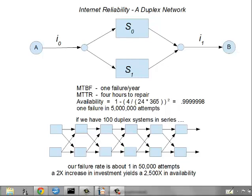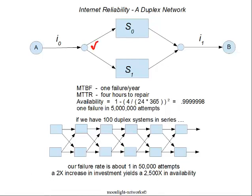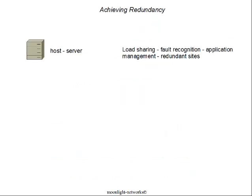Meeting this theoretical model is no simple task. The model assumes perfect information at the switch — that it never switches to a failed system rather than an in-service system. It also assumes that failures are independent — that whatever caused S0 to fail would not repeat itself probabilistically in S1. Those are two of the practicalities that have to be faced. On the next slide we'll see how it's actually implemented in practice, beginning with the host servers.